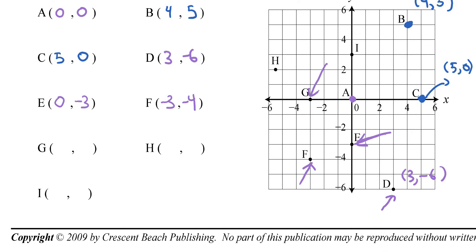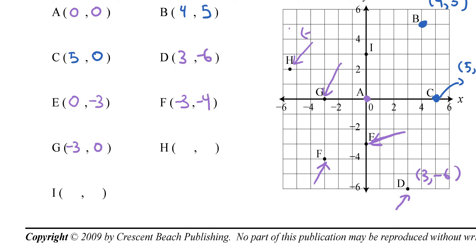Letter G is on the axis — go left 3, so negative 3, and since we're on the axis the Y value is 0, giving negative 3 comma 0. Letter H: you go left about 5.5 and up 2, so H is negative 5.5 comma 2.